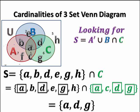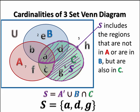So S is equal to the regions a, d, and g. Shading that in, we get this area in purple.